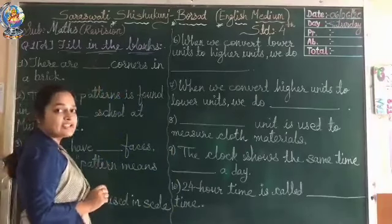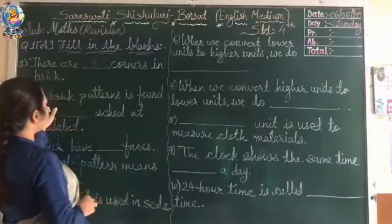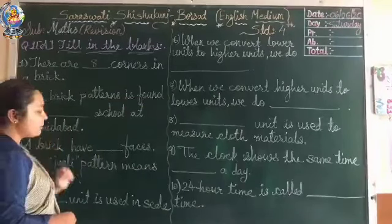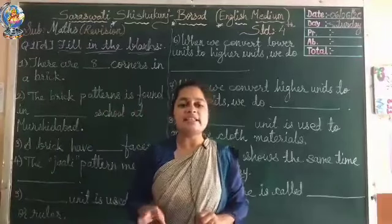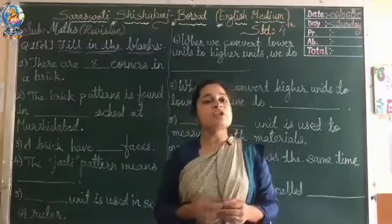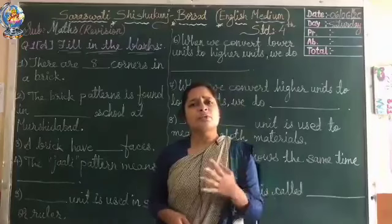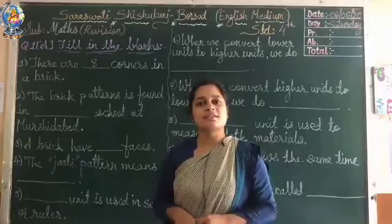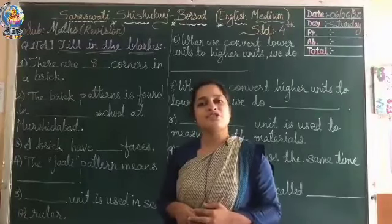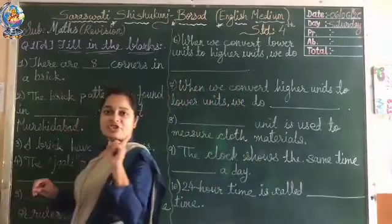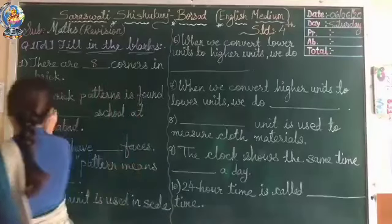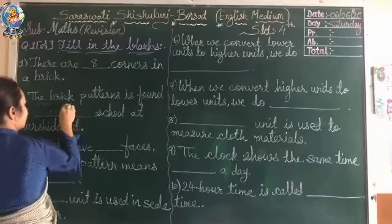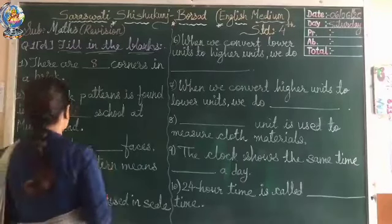Next question: the brick pattern is found in blank school at Murshidabad. In the first chapter, we have already seen that brick patterns were shown of one school. What was the name of that school located at Murshidabad? The school name was Jagriti School. Remember that it's J-A-G-R-I-T-I, Jagriti School.